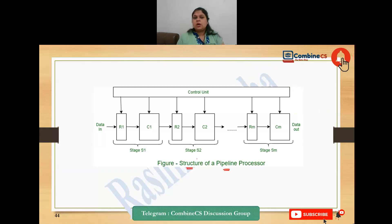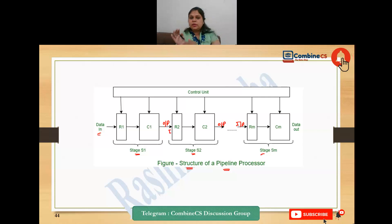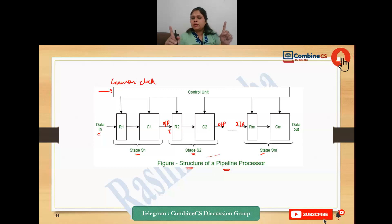The structure of the pipeline processor diagram: this is stage 1, stage 2, and different stages. When you have data input, after processing there is output, then that output becomes input to the next stage. In the instruction you execute, first stage, second stage - all stages share a common clock, which is common for every instruction.